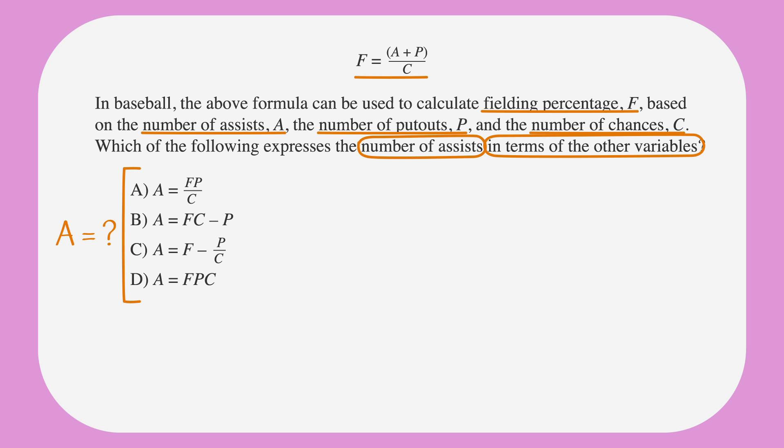We have four variables in this question and in the answer choices, so let's start picking some numbers. This formula is designed to calculate fielding percentage. As we've learned in previous lessons, when you see the word percentage, it's usually beneficial to try to pick the number 100. Since percent means divided by 100, let's say that C equals 100, so our formula will be dividing by 100. Remember to write everything down.